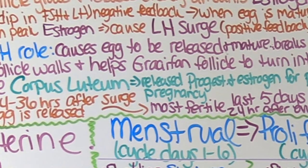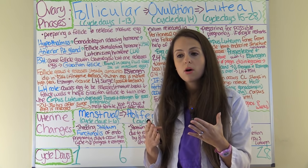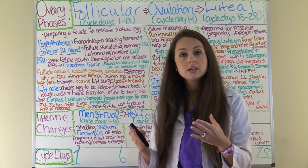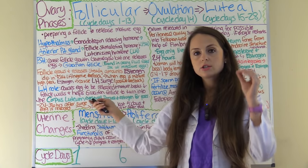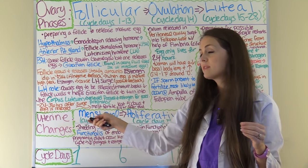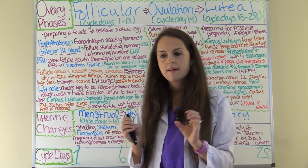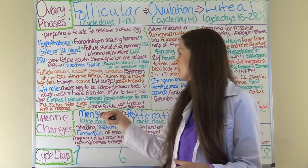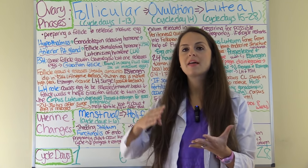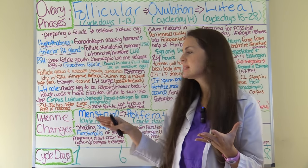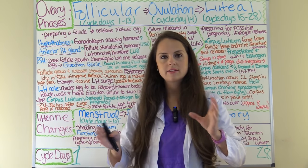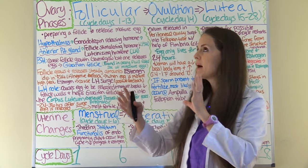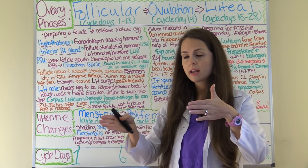The corpus luteum secretes progesterone and estrogen, which make the endometrium receptive for potential implantation of a fertilized ovum. About 24 to 36 hours after the LH surge, the egg will be released. The most fertile days for a woman are about the last five days of the follicular phase and then 24 hours after ovulation — approximately cycle days 9 through 16, though every woman varies.